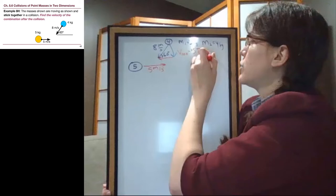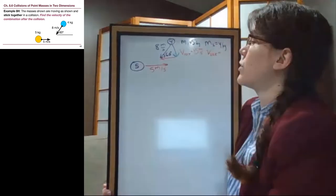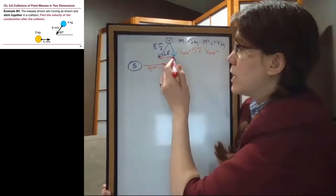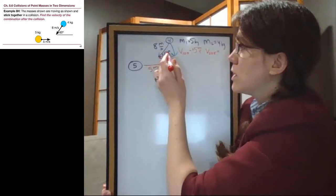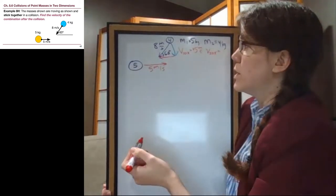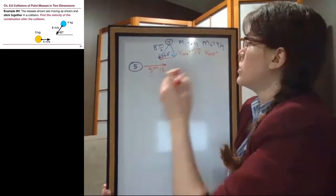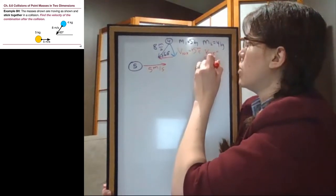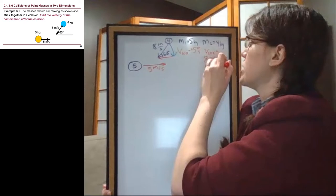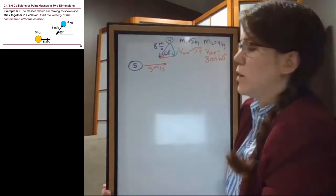The initial velocity in the x direction for mass 1 is positive 5 meters per second. The initial x velocity for the 4-kilogram block is right here. It is the adjacent side to the 60 degrees, and so it is the cosine. It is 8 times the cosine of 60 degrees.